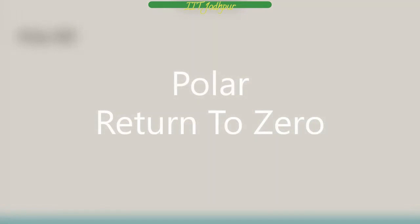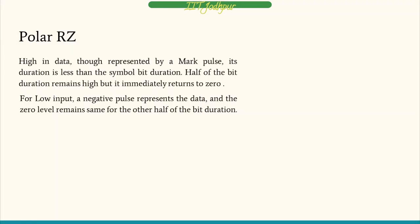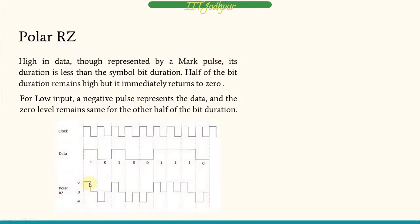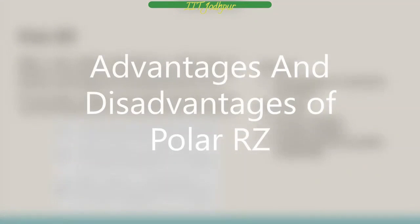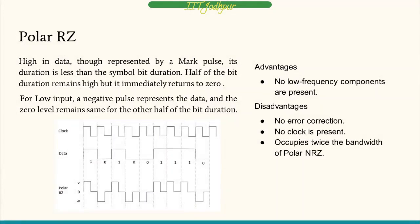The next type is polar RZ (polar return to zero). High data is represented by a high pulse whose duration is less than the bit duration — half the bit duration stays high and then returns to zero. For low input, a negative pulse represents the data, also of half duration. No low frequency components are present. Disadvantages: no error correction, no clock, and it occupies twice the bandwidth of polar NRZ.